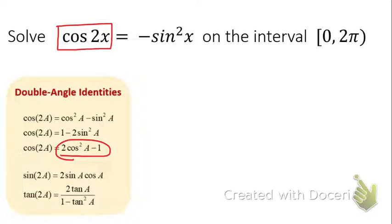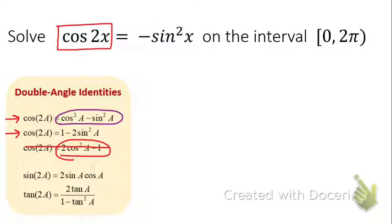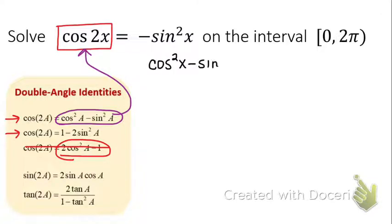The better option would be one of the first two, and you can use either one — they will both work for this scenario. For this example, I'm going to use the first one, substituting it in for my cosine double angle. When I substitute that in, it becomes cosine²x minus sine²x equals sine²x.